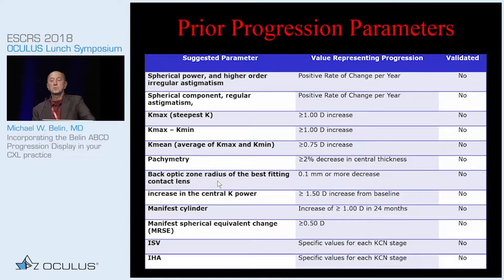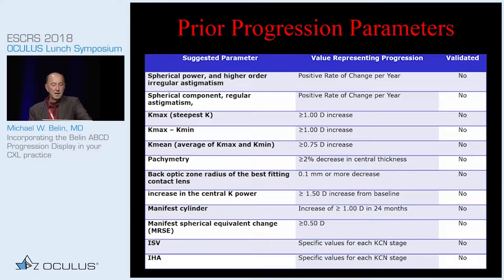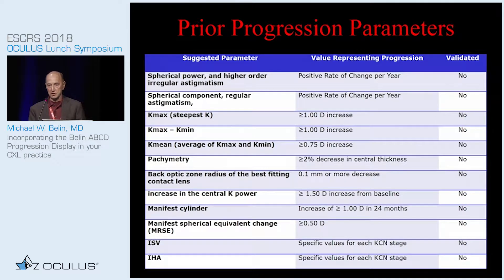If you look at the currently published progression parameters and go down this whole list, except for pachymetry in the middle, these are all anterior curvature parameters. In other words, these are measurements that tell you when you've had progression of disease after you've already lost vision.